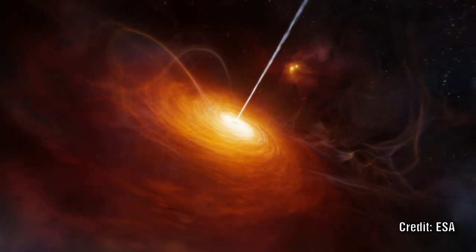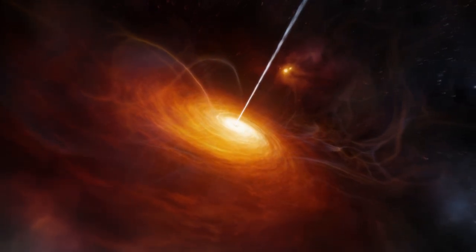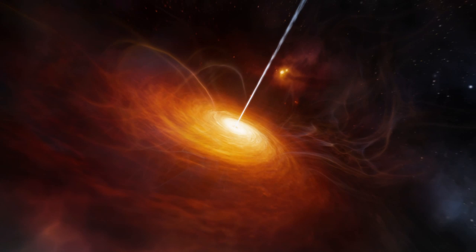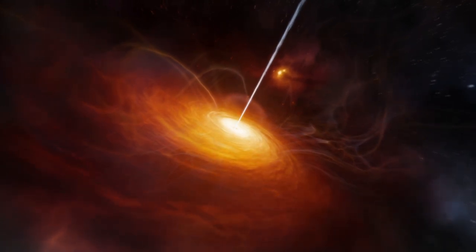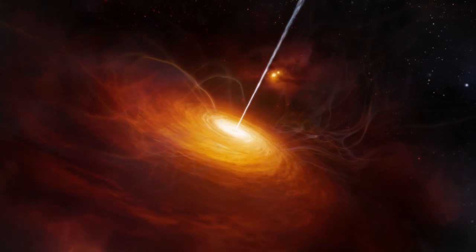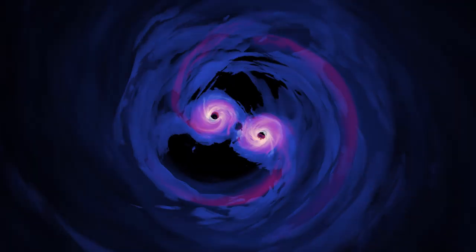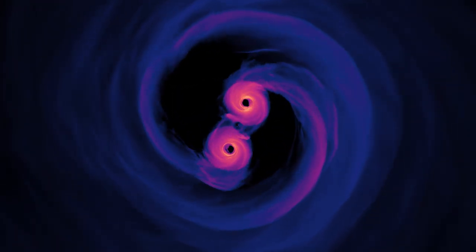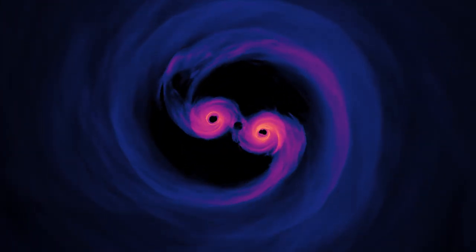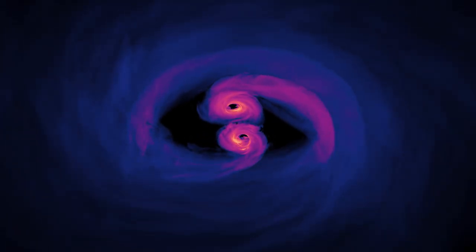And this does remind me of Arp's work on quasars and his idea that they were formed via the nearby galaxies. More important is the idea of the periodicity of the quasar. To me, the idea of two spinning black holes to account for the periodicity is just a little too far-fetched, ignoring how far-fetched I believe that black holes are. So is there a more reasonable explanation?